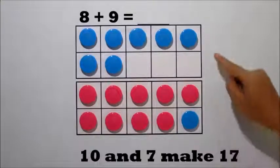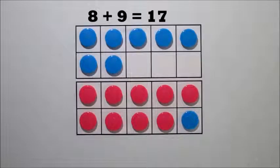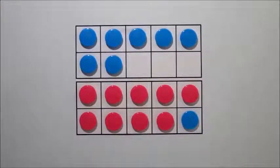10 and 7 make 17. So, 8 plus 9 equals 17. Do you have the same answer? Well done! Thank you. Bye-bye.